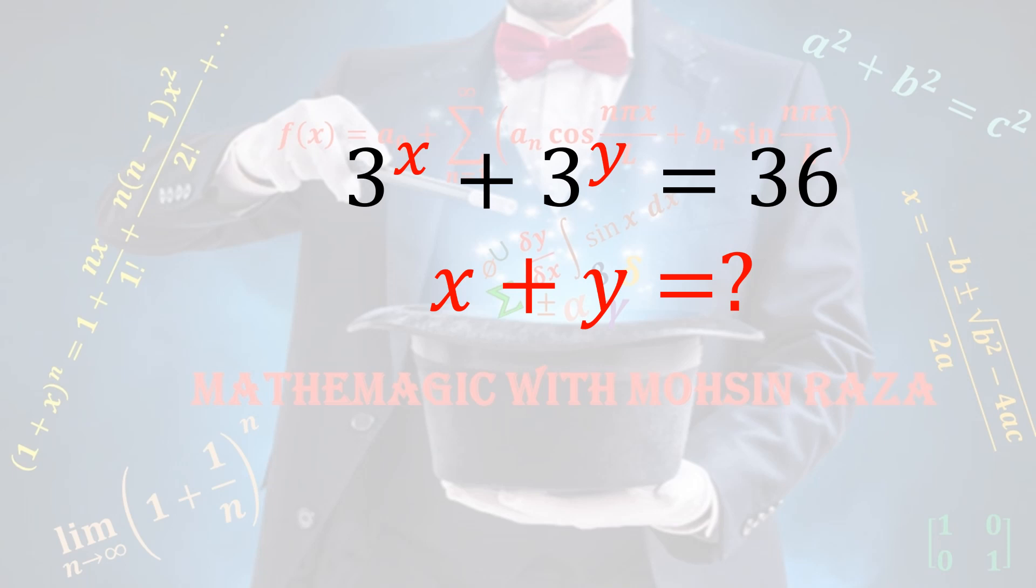Hi, welcome to my channel Mathematic with Mohsen Raza. Today I come up with an interesting question that came in International Mathematical Olympiad. This is an exponential equation and we have to find the value of x and y to find the value of x plus y. So the equation is 3 raised to power x plus 3 raised to power y equals to 36.